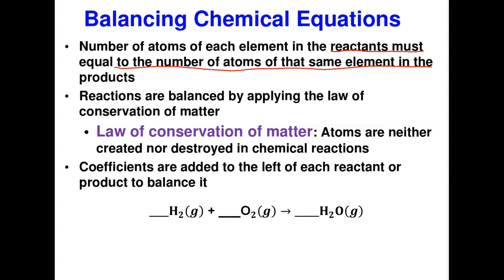To balance equations, we add coefficients in front of each element or substance using the trial-and-error method. This is the most convenient method. We use trial and error to make sure that as we add coefficients in front of each element, the number of atoms of each element on both sides of the reaction balances.